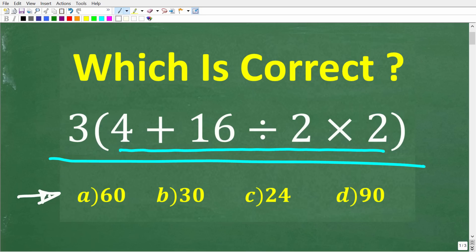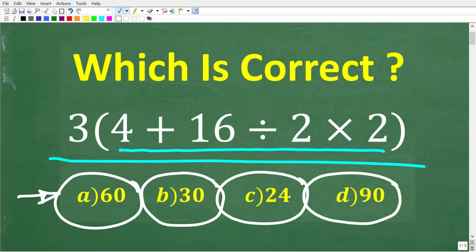But we do have a multiple choice question here and let's take a look at our answers. So A is 60, B is 30, C is 24, and D is 90.